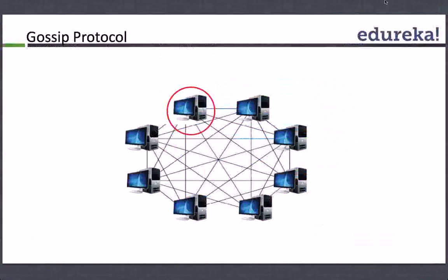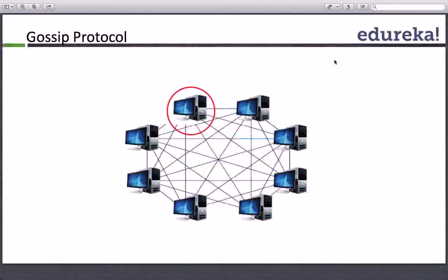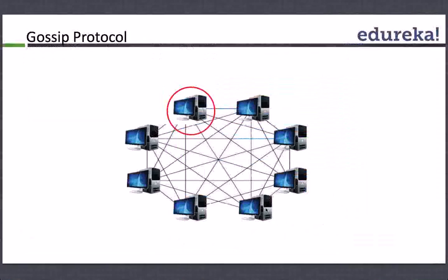What is a gossip protocol? We saw that in Cassandra is a peer-to-peer communication or peer-to-peer update. Each node talks to other nodes to find out information about the state of other nodes.